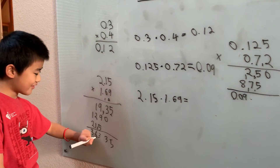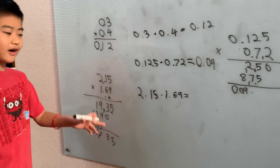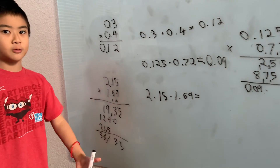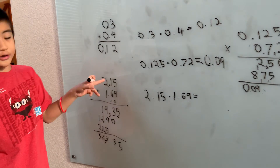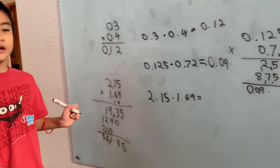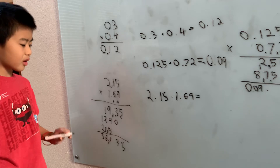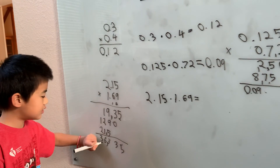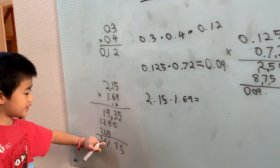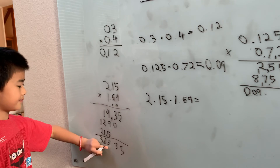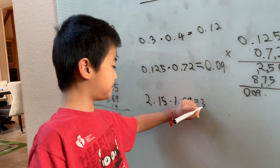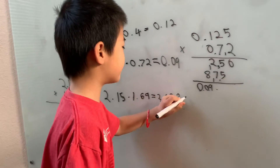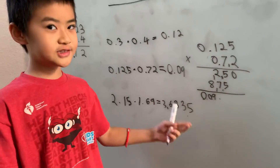Now we just count the digits after the decimal points. We don't count the digits before the decimal — only the decimal places: 2.15 has two, and 1.69 has two — that's four digits total. So we place the decimal four places from the right in 36335, giving us 3.6335. And we're done.